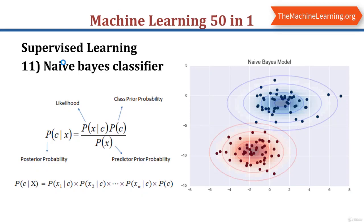The next topic is naive Bayes classifier. Naive Bayes classifier is a collection of classification algorithms based on Bayes theorem. It's not a single algorithm but a family of algorithms that share a common principle: every pair of features being classified is independent of each other. Using Bayes theorem, we can find the probability of C happening given that X has occurred. Naive Bayes algorithms are mostly used in sentiment analysis, spam filtering, and recommendation systems.